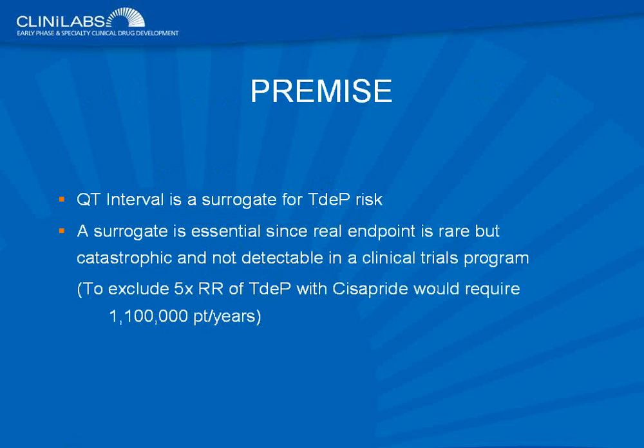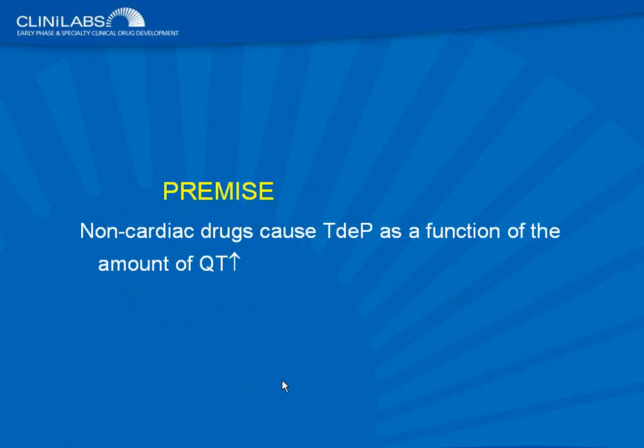The premise here is that the QT interval is a surrogate for risk for torsad, but the real event we care about is rare. In the course of development of a new chemical entity, it's very unusual to see a documented case of torsad. To exclude a relative risk of five times for torsad with cisapride would have required over a million patient-years of observation — something almost impossible in modern clinical trials. And yet we know that cisapride had that liability and led to its withdrawal from the market.